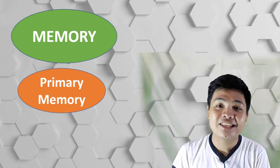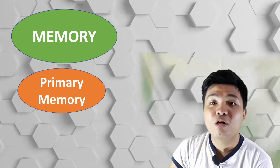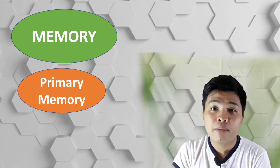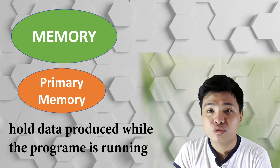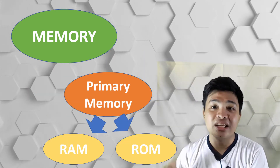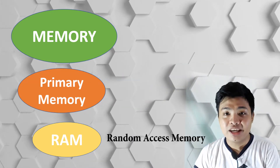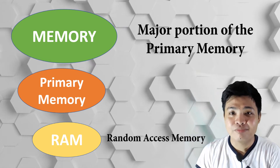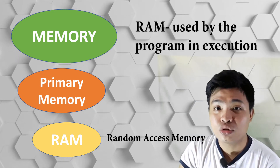Primary memory is the temporary area for holding data. It also stores the program currently being used and holds data produced while the program is running. Primary memory is of two types: RAM and ROM. RAM, or Random Access Memory, is the major portion of primary memory and is the memory used by the program in execution.